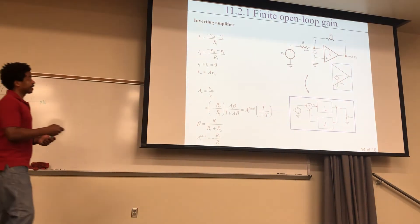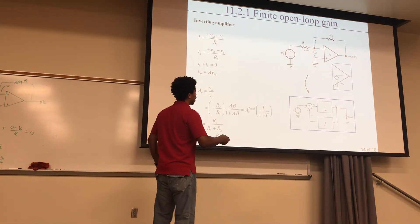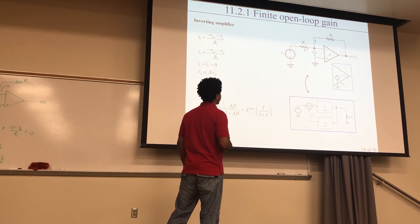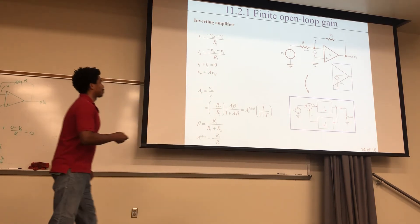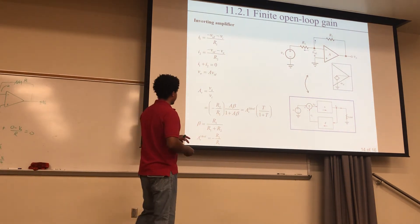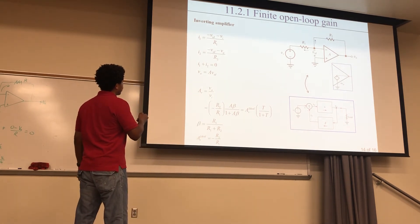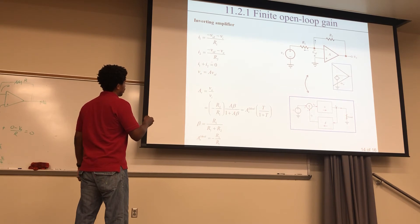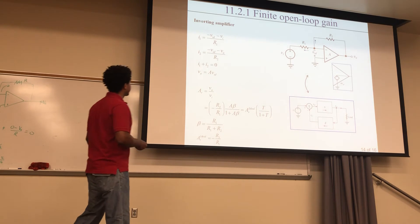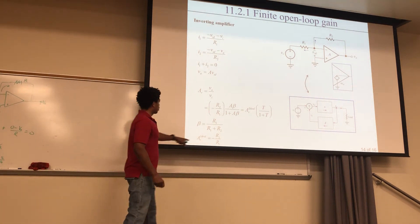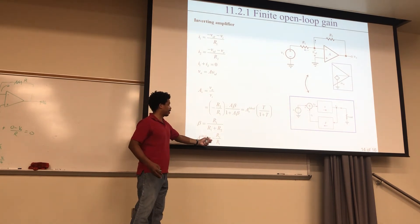For the inverting amplifier with finite open-loop gain, the analysis is similar. The circuit still maps to the feedback block diagram, though beta is slightly more complicated here. The result clearly shows an inverting amplifier because of the negative sign — that's how you distinguish inverting versus non-inverting in the final expression.